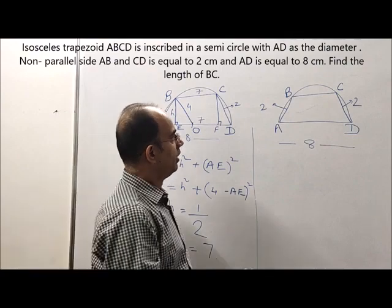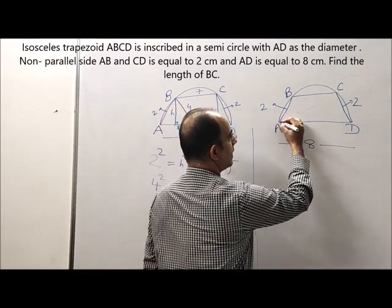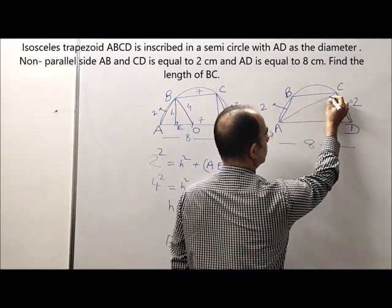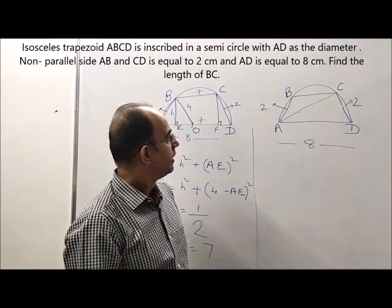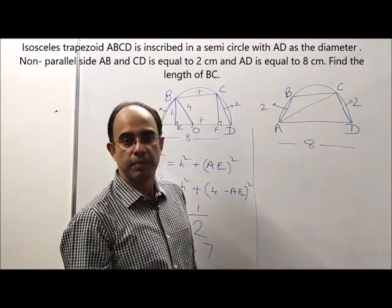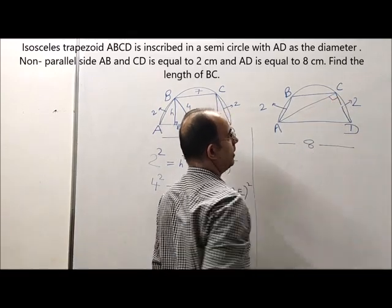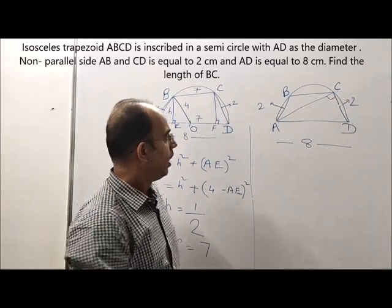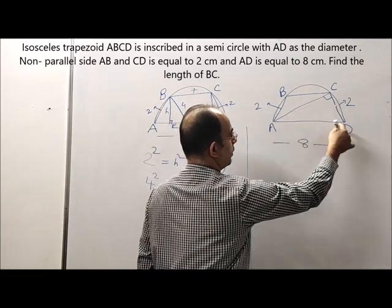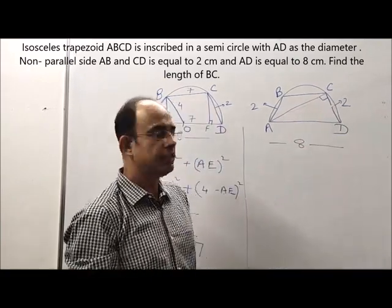Now let us think of a different method. Here let us connect AC. We know that angle in the semicircle is 90 degrees, hence this becomes 90 degrees. We can again apply Pythagoras theorem here to find the length of AC.